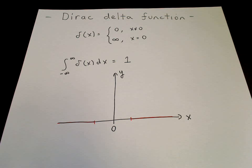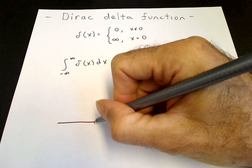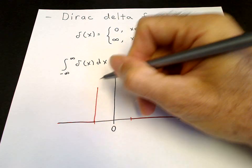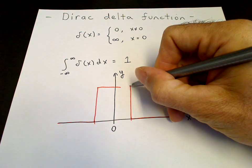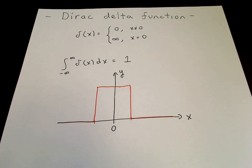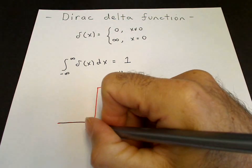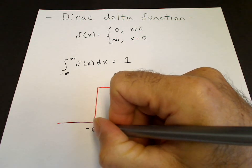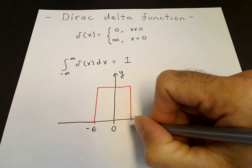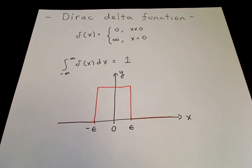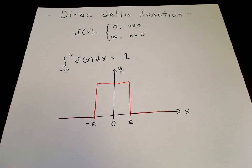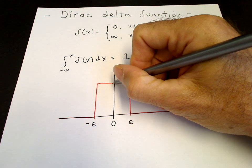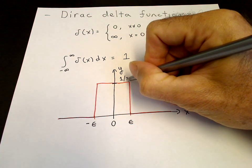For that region around the origin, it steps up and then takes on some large value, and then steps down. So this is an approximation to the delta function. This can be the value of minus epsilon, and this can be the value plus epsilon. Epsilon is going to be considered small, so the width of this rectangle is 2 epsilon. And in order for the area of this rectangle to be 1, the height has to be 1 over 2 epsilon.